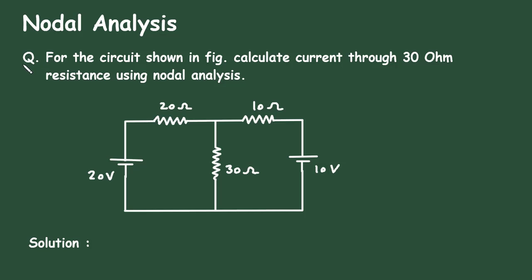Nodal analysis question. For the circuit shown in figure, calculate the current through the 30 Ohm resistance using nodal analysis. In this circuit, we have to find the current through this 30 Ohm by using nodal analysis.